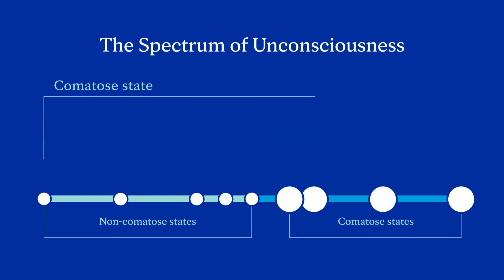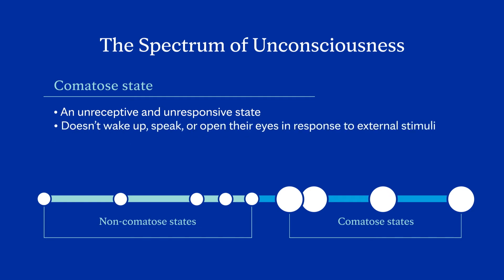And here is where we move into unconsciousness. For the purposes of this video, we are moving past normal unconscious sleep and only focusing on comatose states. A comatose state is an unreceptive and unresponsive state beyond just sleeping. Unlike sleeping individuals, comatose individuals don't wake up, speak, or open their eyes in response to external stimuli, such as someone talking or turning on the light. They are also unaware of what's happening in their surroundings while comatose.